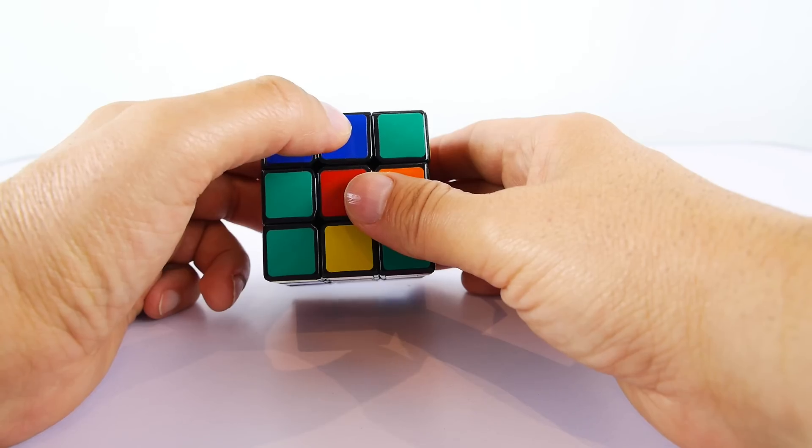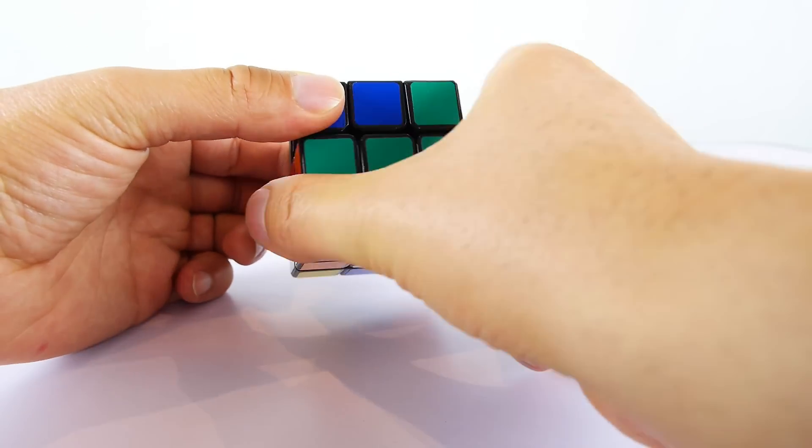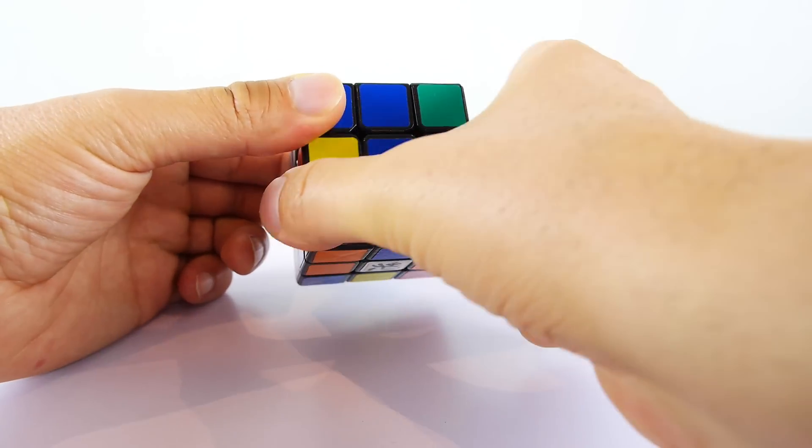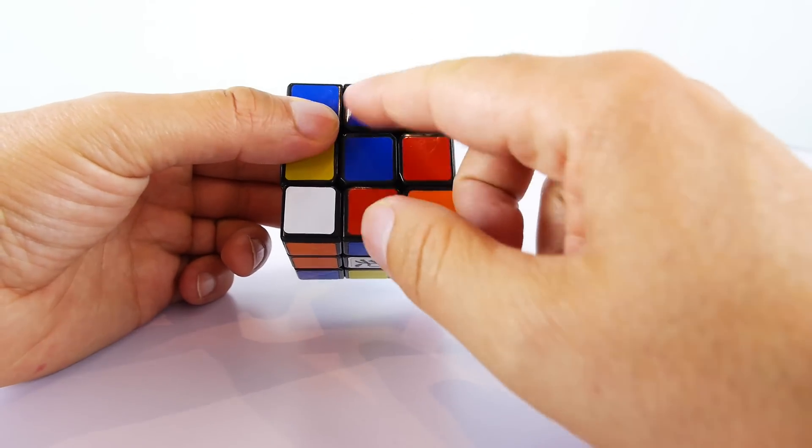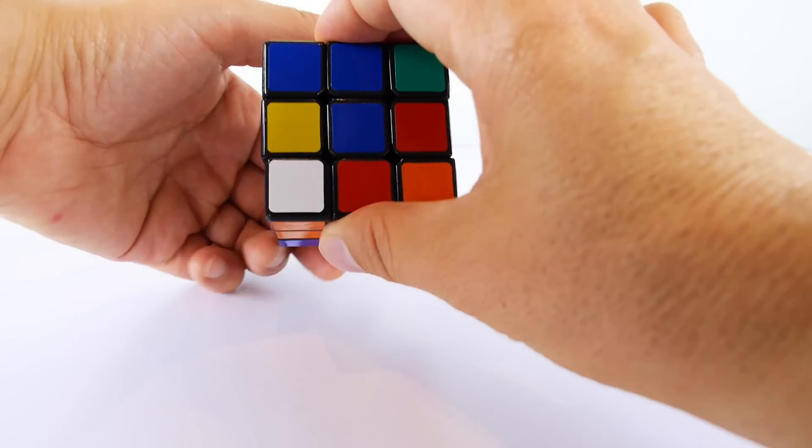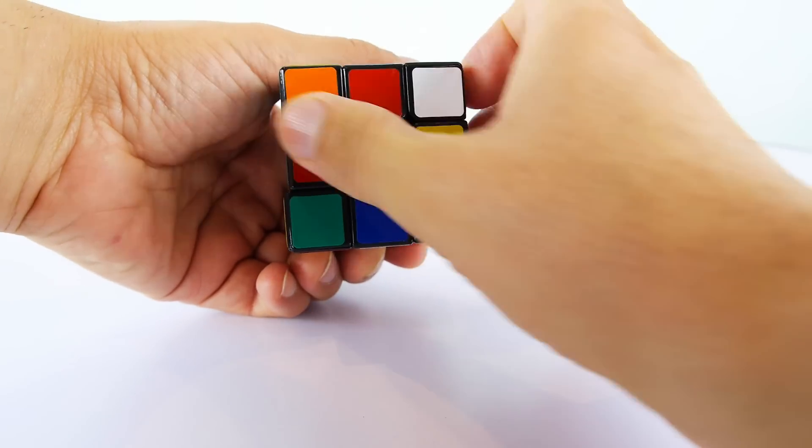For example, we have the blue here. Let's keep moving the bottom two layers around until... there you go, we found the corresponding blue. Now what I want you to do is turn the front face forward twice, once and another time.